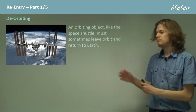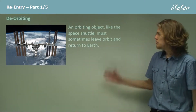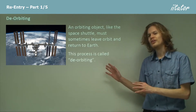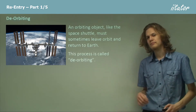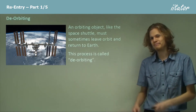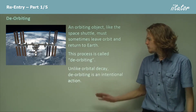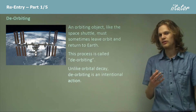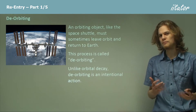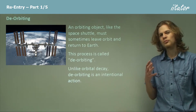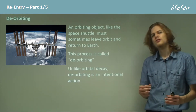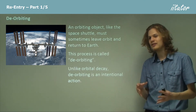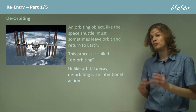An orbiting object, like for example the Space Shuttle, must eventually return to Earth. This process is called de-orbiting — we're going from orbit and leaving it. Unlike orbital decay, this is an intentional process, not an accidental and unwanted one. We need to be able to control this so that the effects of orbital decay on satellites aren't applied to the manned spacecraft that we want to save.